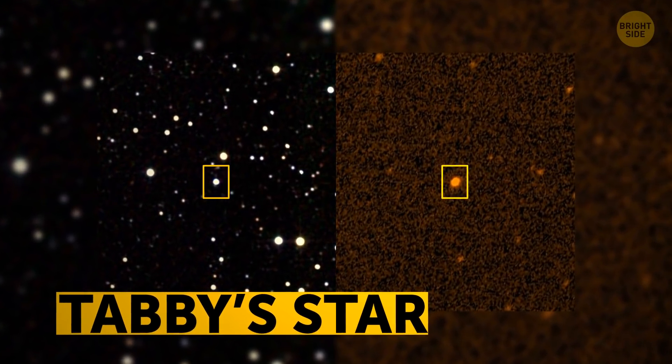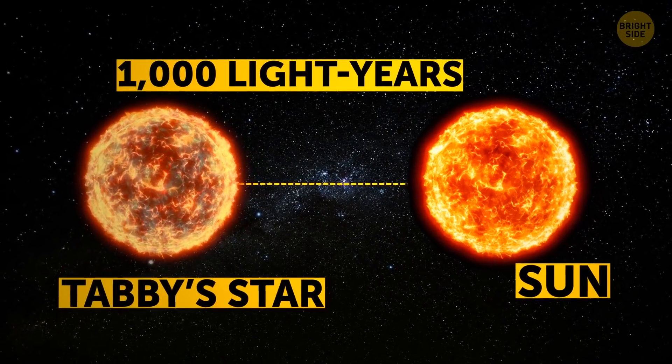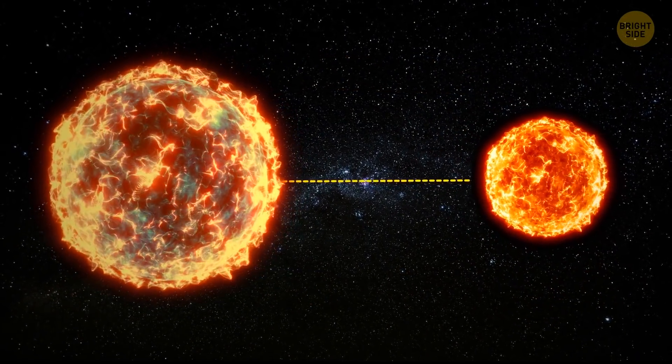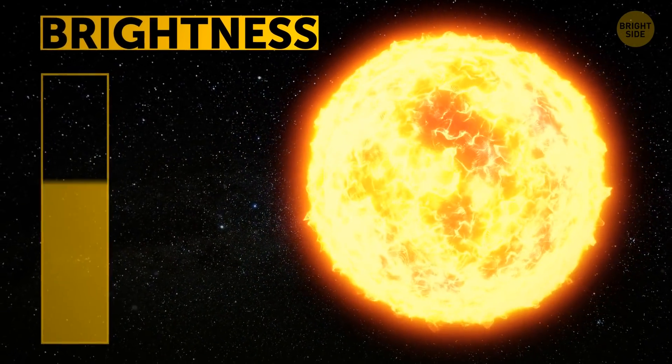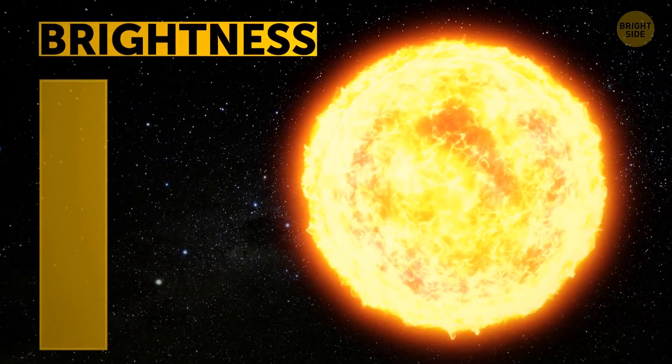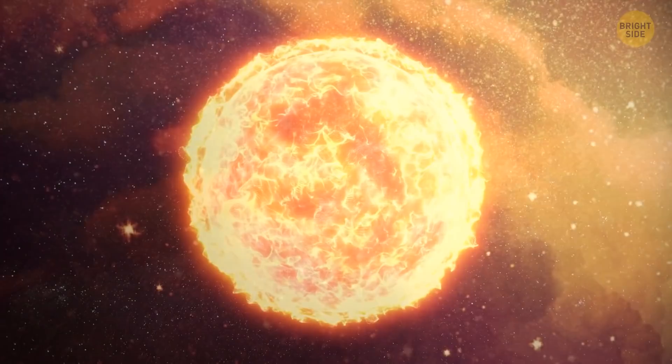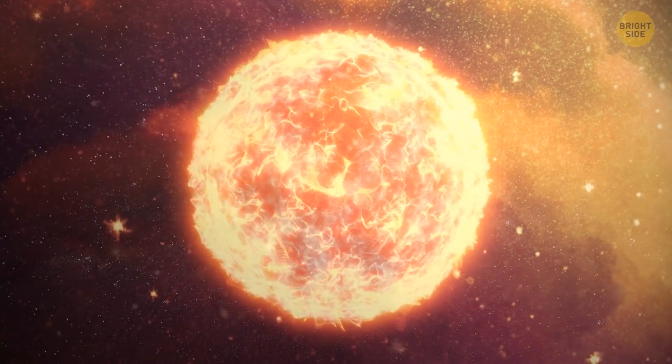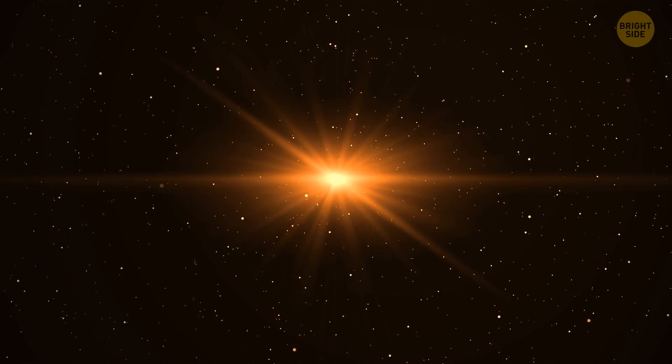Tabby's star is sure among the most mysterious in the universe. It's a thousand light-years away, 50% larger, and a lot hotter than the Sun. In 2015, scientists noted that Tabby's star's brightness would dim down by as much as 22%. Big clouds of dust could be guilty of that, but this star is too old to have something like that. It's still not clear what could be causing this massive dimming.